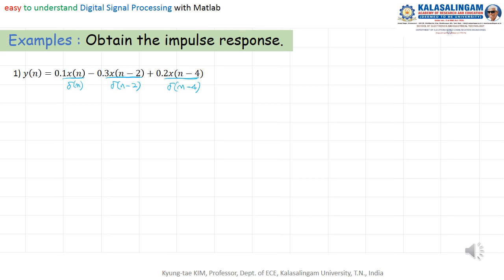Then we can rewrite h(n). H(n) equals 0.1·δ(n) minus 0.3·δ(n−2) plus 0.2·δ(n−4). This is the impulse response.